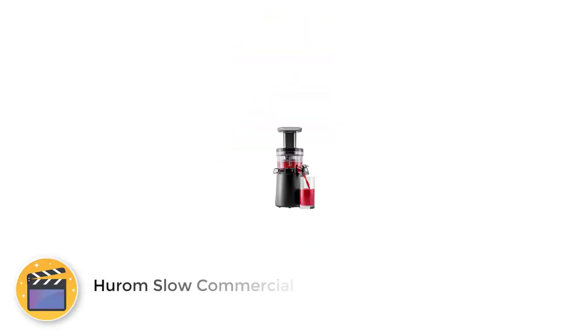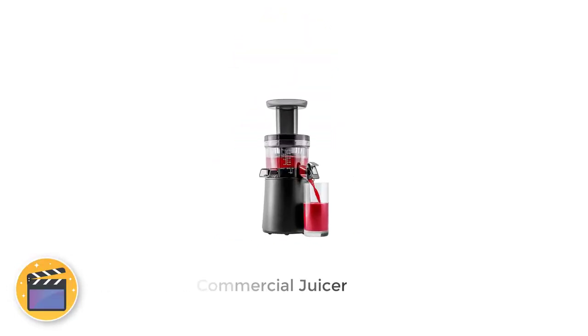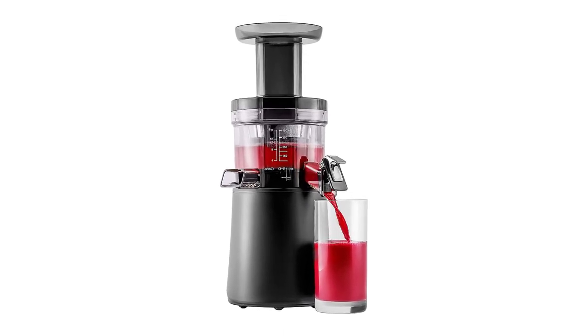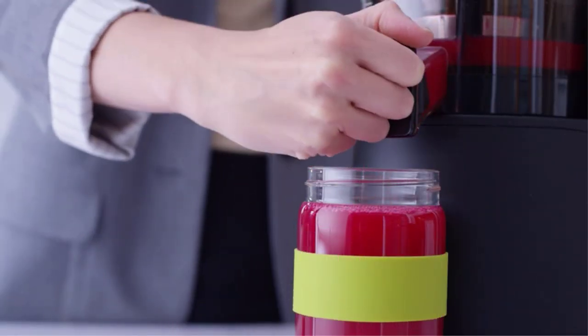Number 2. Hurom Slow Commercial Juicer. The Hurom Slow Commercial Juicer is a revolutionary machine that extracts more nutrients from fruits and vegetables than any other juicing device.